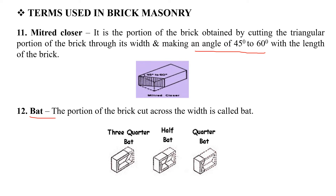The Bat is the portion of a brick cut across the width. There are different types: the 3-quarter bat, the half bat, and the quarter bat. The 3-quarter bat retains three-quarters of the brick length, the half bat retains half, and the quarter bat retains one quarter.